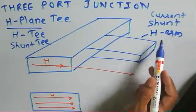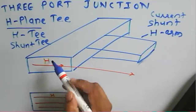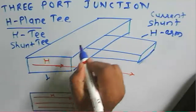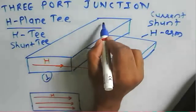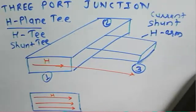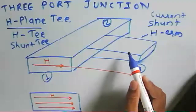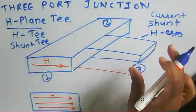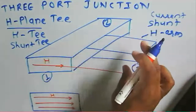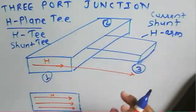Port 1 and port 2 are the main arms of the waveguide, and port 3 is the H-arm or side arm for this H-plane T.